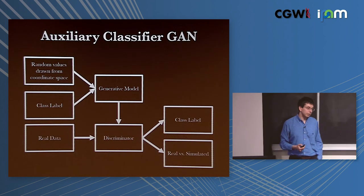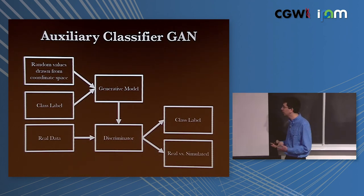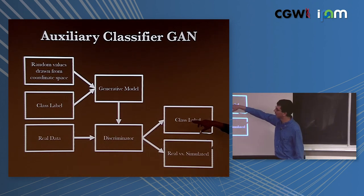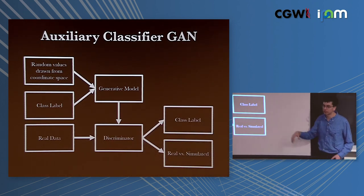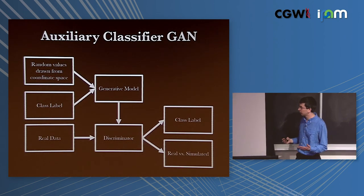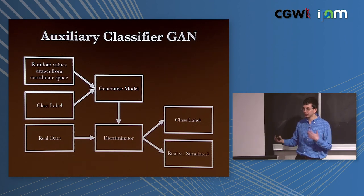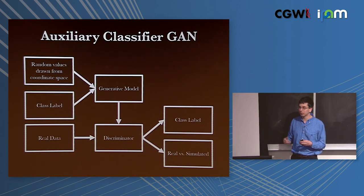For this two-arm trial, we used an auxiliary classifier GAN. The main difference is that you also generate a class label, and the discriminator also tries to deal with this class label. Essentially, these two neural networks are playing Balderdash against each other - one is making up definitions and the other is trying to figure out which are real or fake.